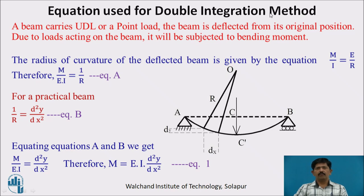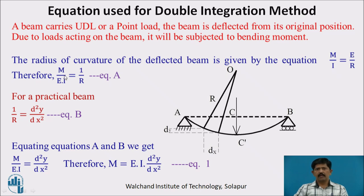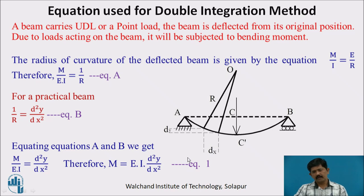The double integration method equation is derived as follows. When a beam is subjected to UDL or a point load, it deflects from its original position taking a curvature shape. The radius of curvature of a deflected beam is given by M/EI = E/R, therefore M/EI = 1/R (Equation A). Practically, 1/R = d²y/dx² (Equation B). Equating A and B: M/EI = d²y/dx², therefore M = EI·d²y/dx² (Equation 1), which is used to find slope and deflection by the double integration method.